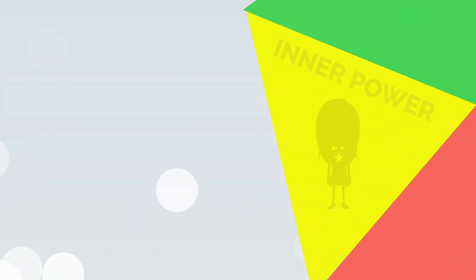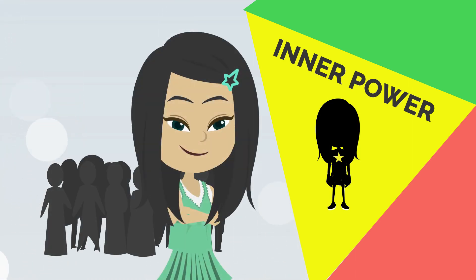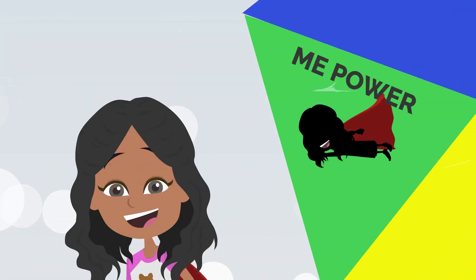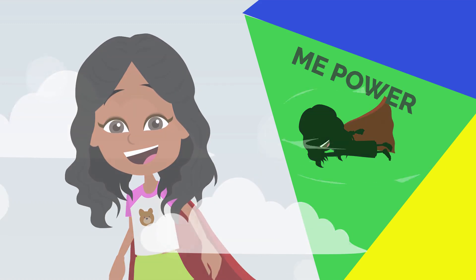Second is inner power, helping children choose who they want to be and how to stand up to peer pressure. Third is me power, this is when we help children develop soaring self-esteem and powerful self-confidence.